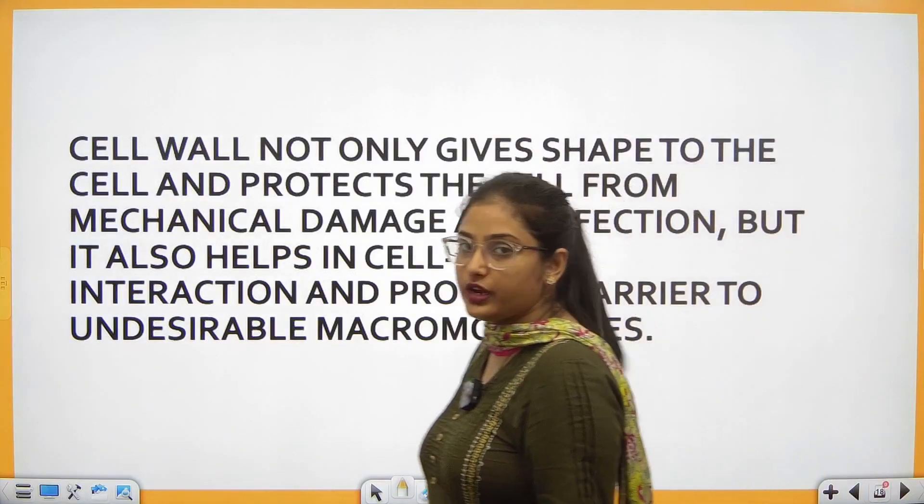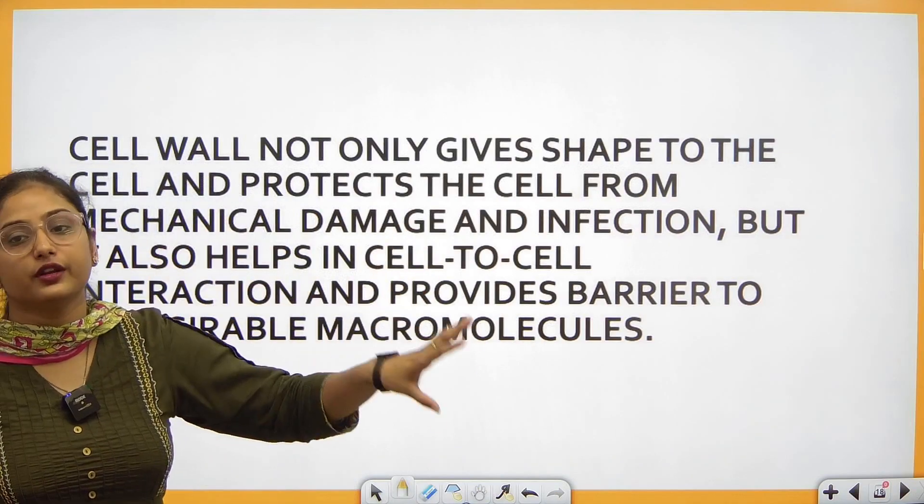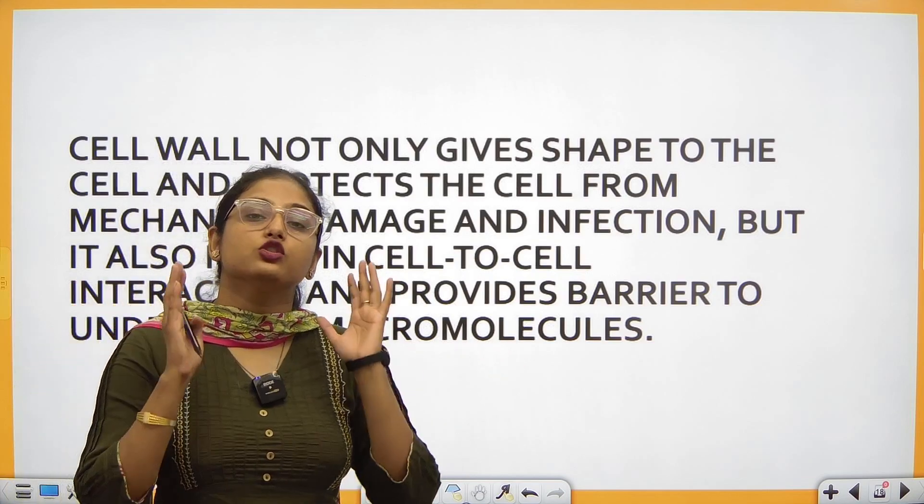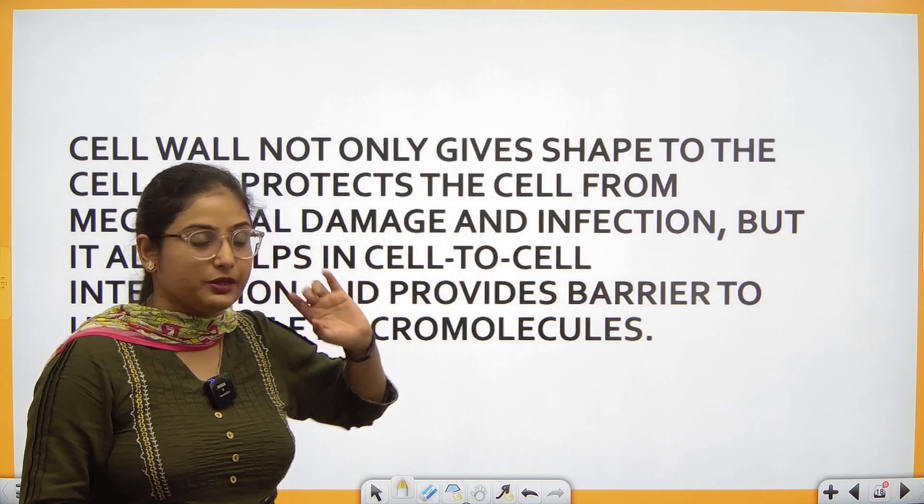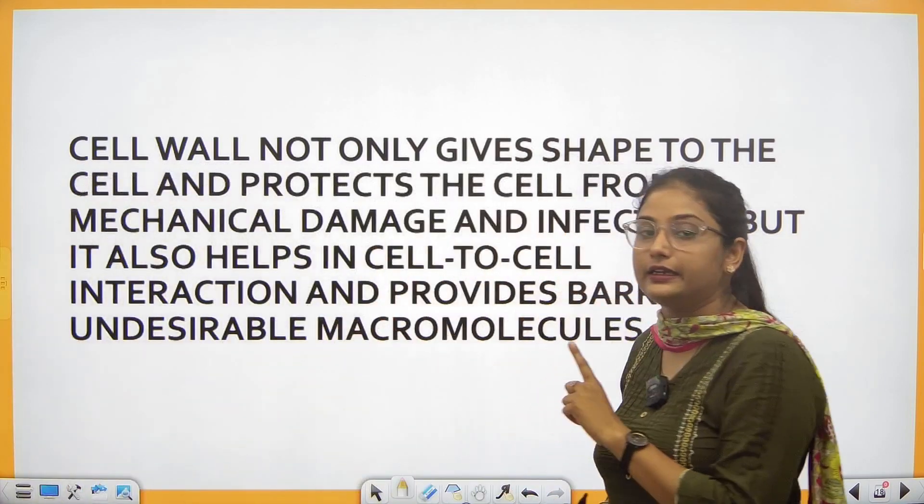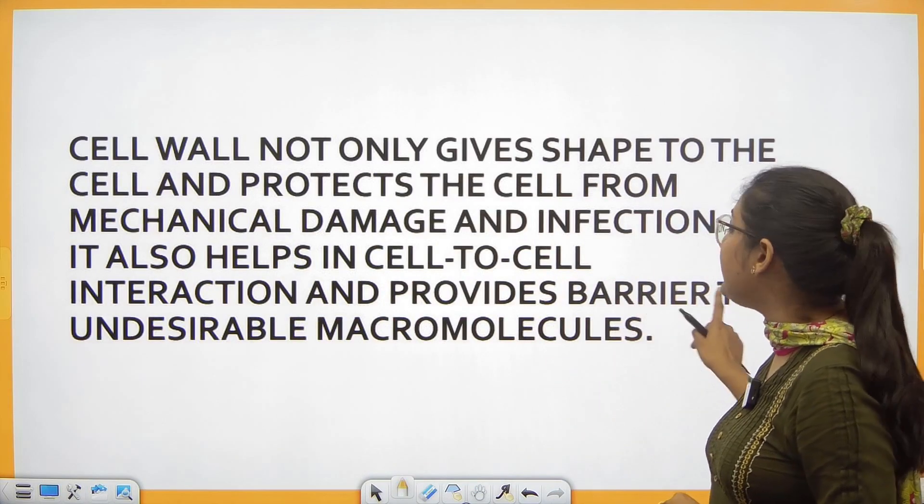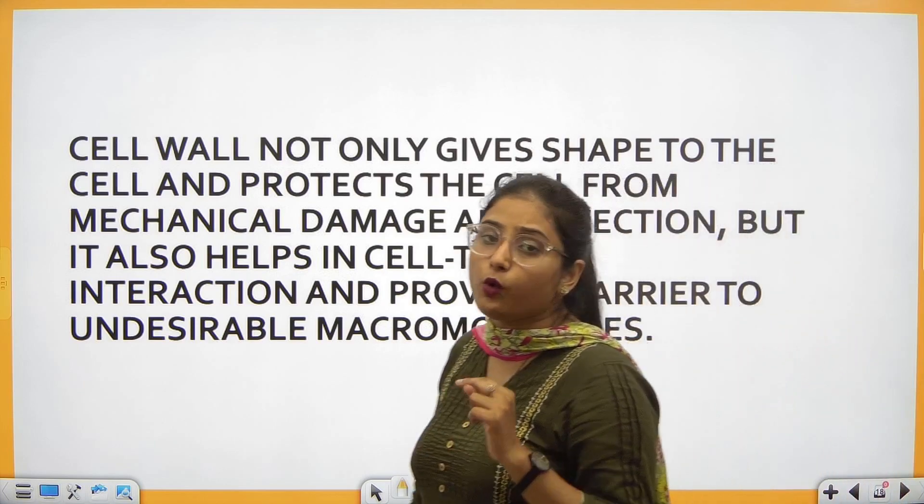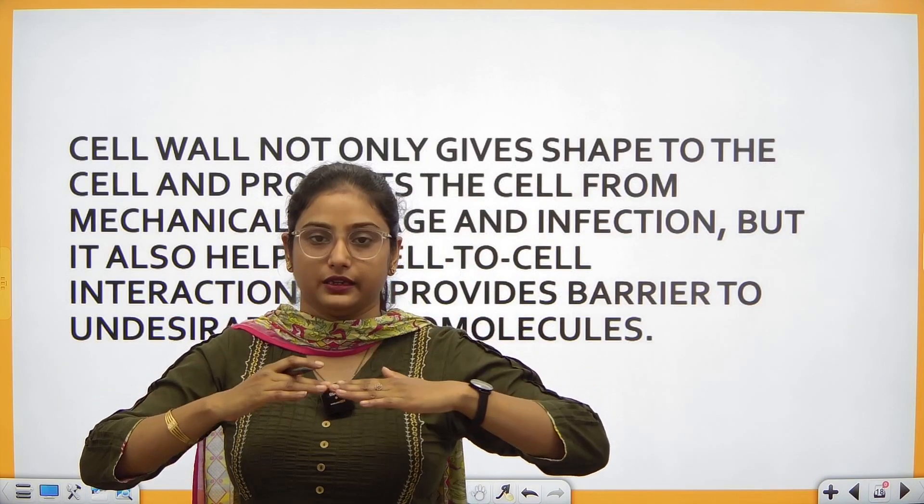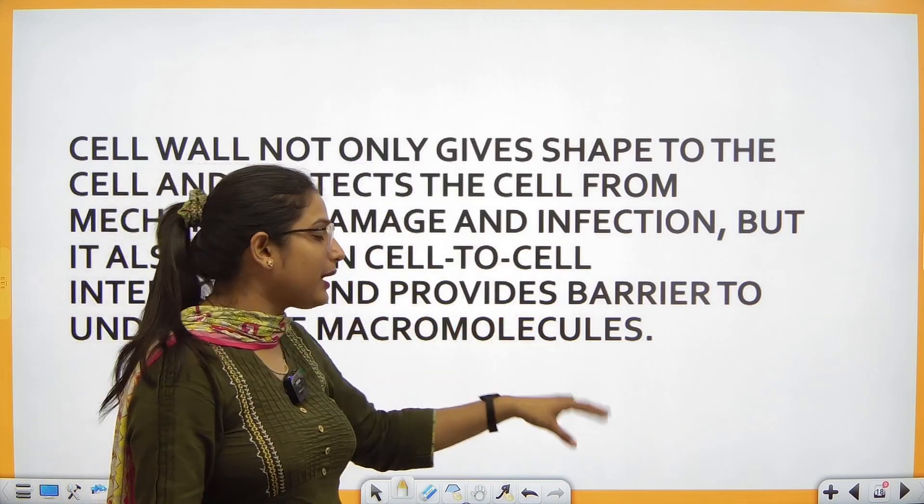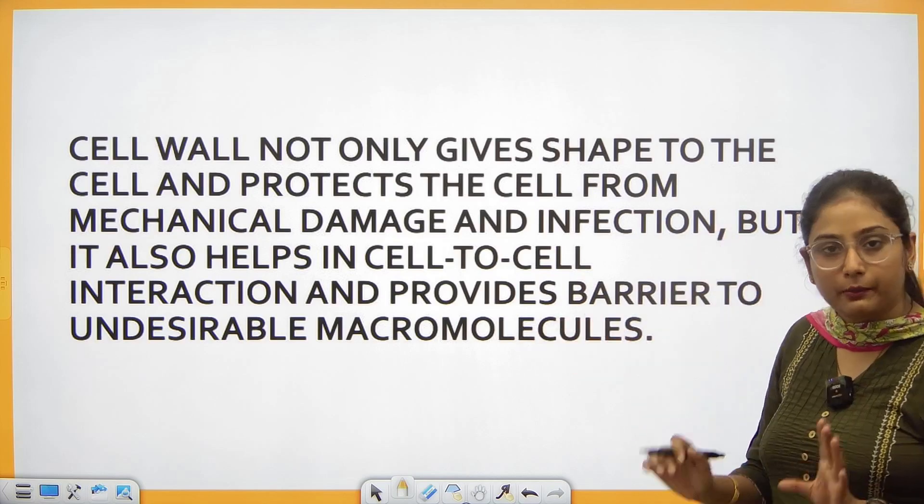Cell wall not only gives shape to the cell, it protects itself from mechanical damage and infection. If there is any damage from outside, the cell wall is standing like a wall. Also, it protects it from any infection and helps in cell-to-cell interaction. It provides barrier to undesirable macromolecules and helps in making junctions between cells.